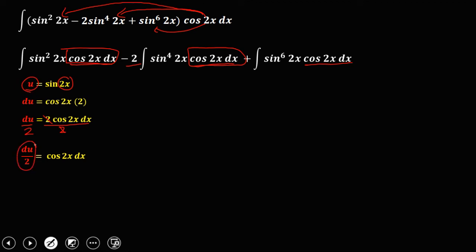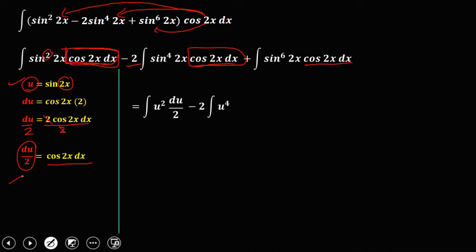Substituting u and du over 2: the first term becomes the integral of u to the power 2 times du over 2, since the exponent of sine is 2. Minus 2 times the integral of u to the power 4 times du over 2, since the exponent of sine is 4. Plus the integral of u to the power 6 times du over 2, since the exponent of sine is 6.